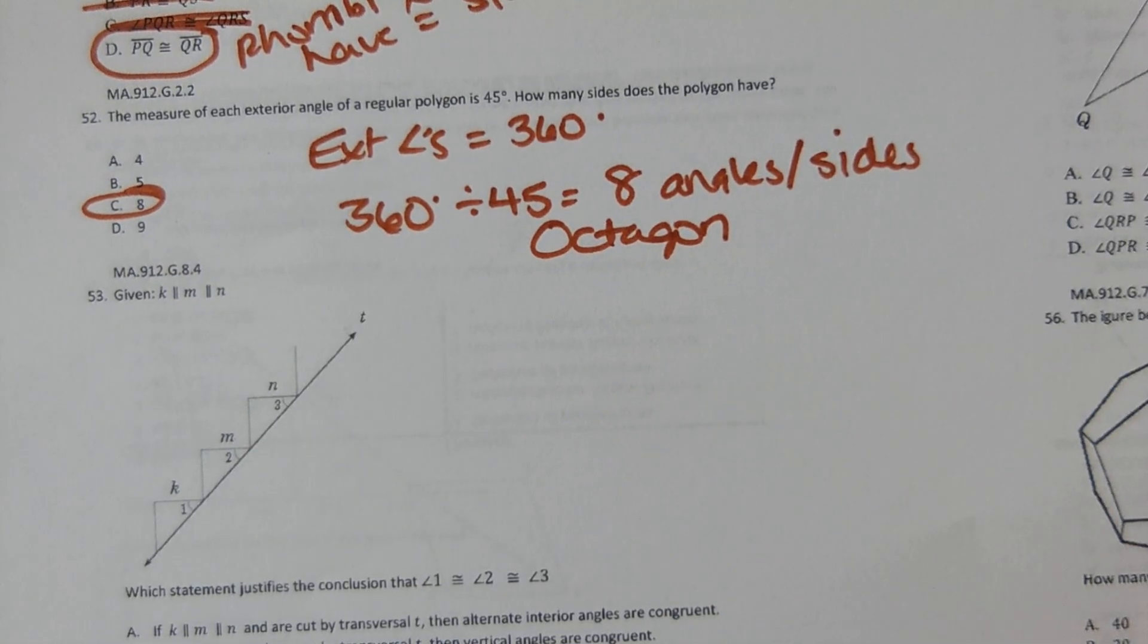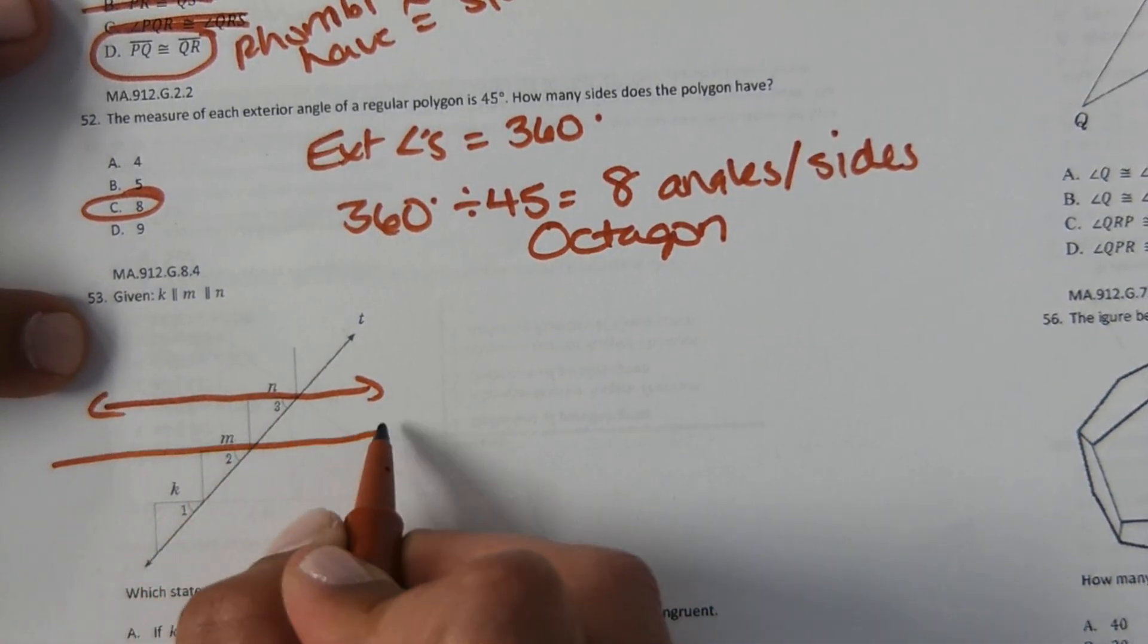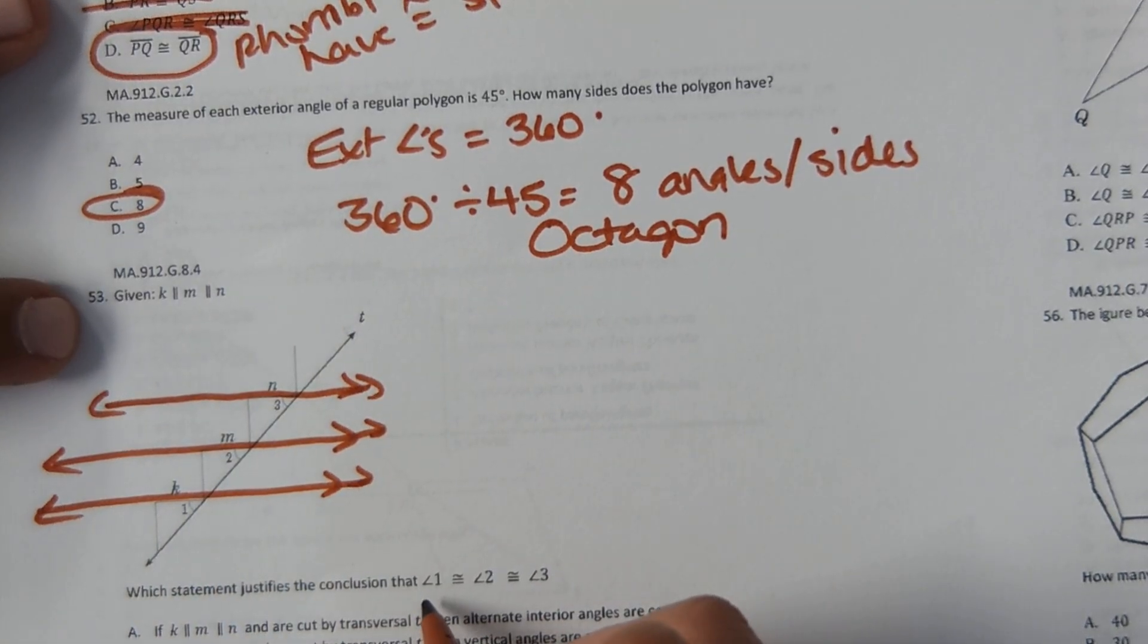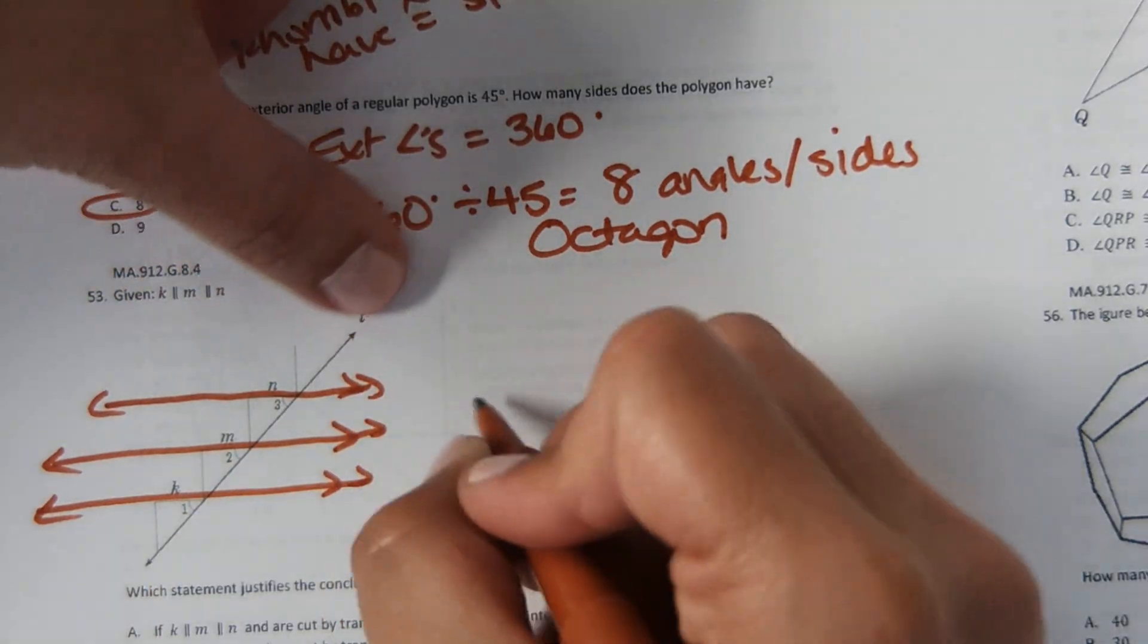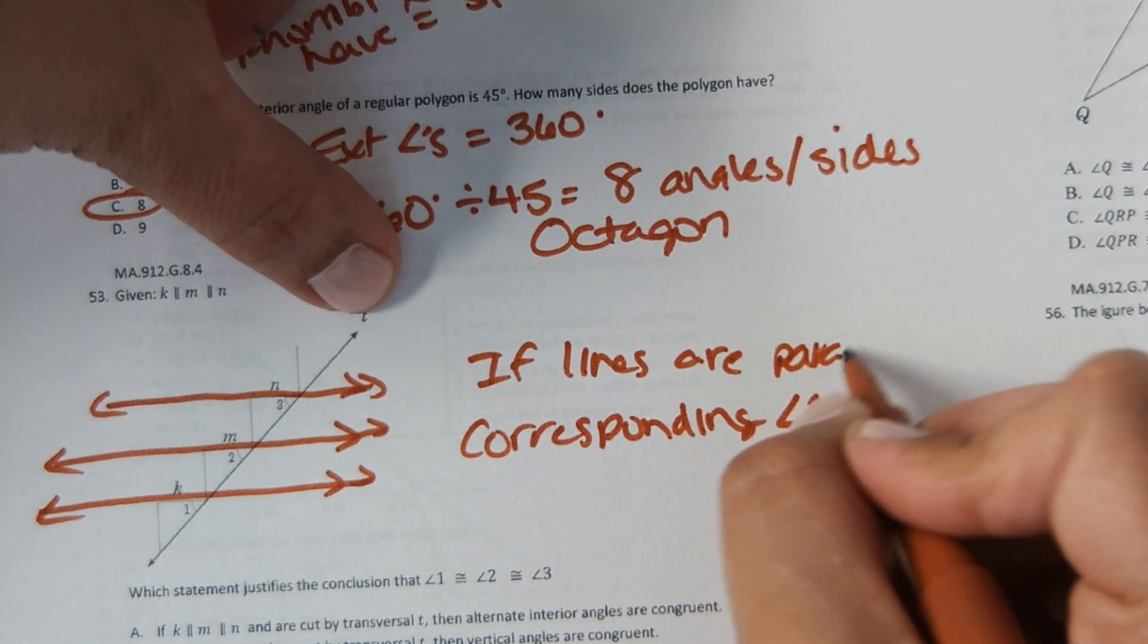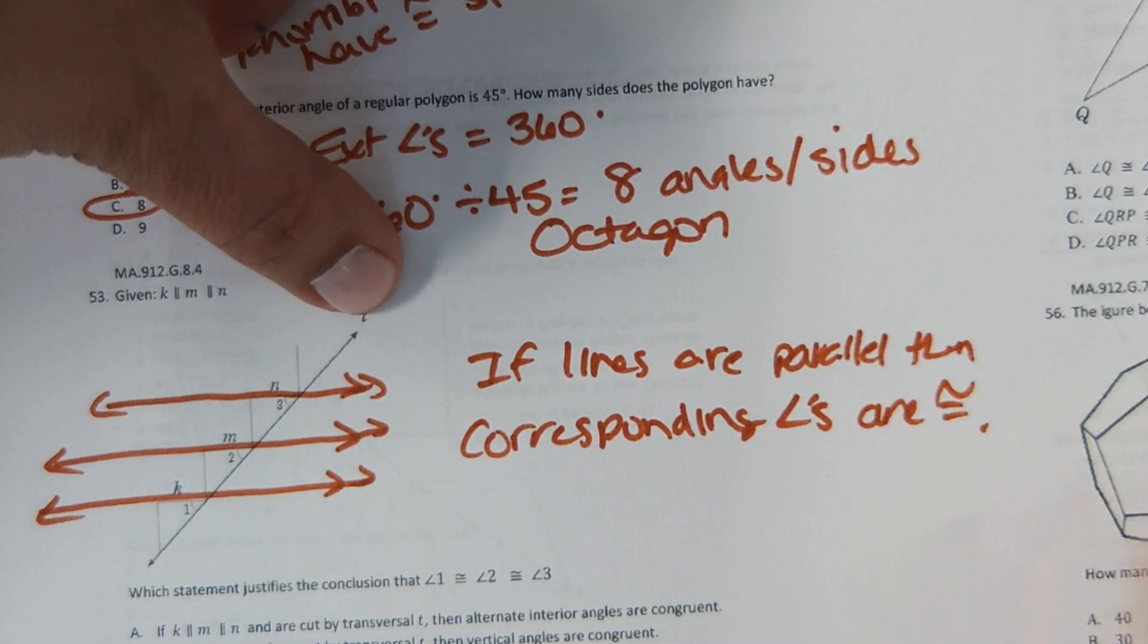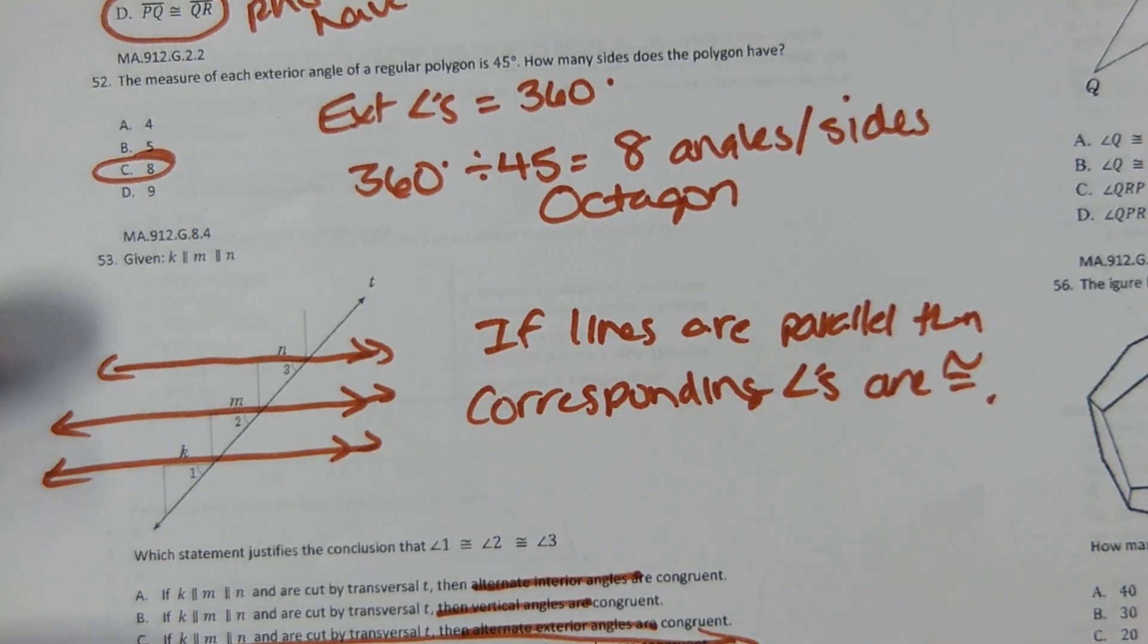And the last one we're doing together right now, it says given that K is parallel to M and N. So this line is parallel to this line and is parallel to this line. Which statement justifies the conclusion that 1 is congruent to 2 and congruent to 3? And it shows these angles here. Those angles are corresponding angles. And if lines are parallel, then corresponding angles are congruent. So that means that's what I'm looking for. This says alternate interior angles. Nope. Vertical angles. Nope. Alternate exterior. Nope. Corresponding angles right here for answer D.